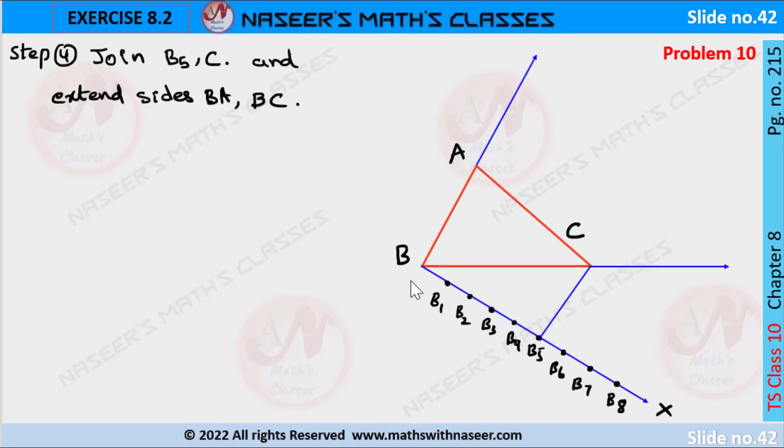After indicating 8 equal parts on BX from point B, we have to join B5 and C and extend B8 and BC line segments.